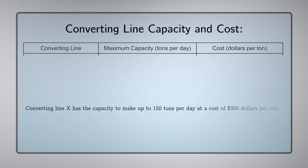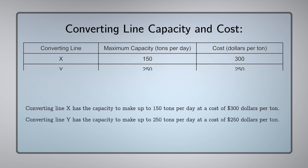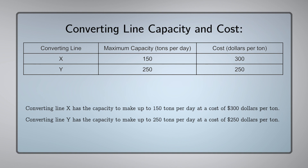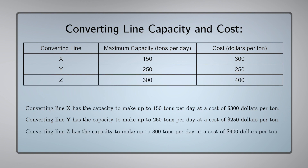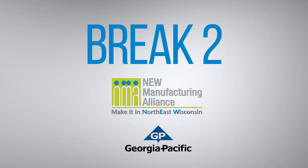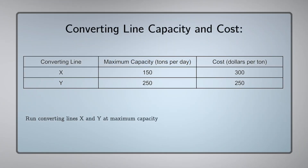Converting line X has the capacity to make up to 150 tons per day at a cost of $300 per ton. Converting line Y has the capacity to make up to 250 tons per day at a cost of $250 per ton. Converting line Z has the capacity to make up to 300 tons per day at a cost of $400 per ton. All right, we should go with line X and Y at their maximum capacities and convert the rest of the 100 tons on line Z for a total of 500 tons.